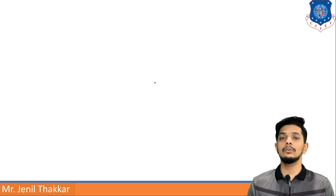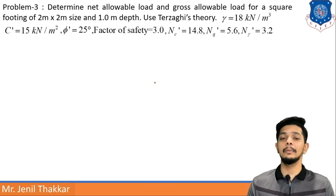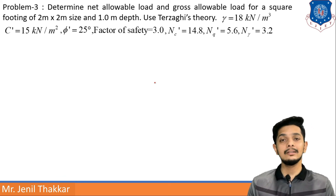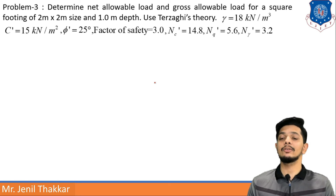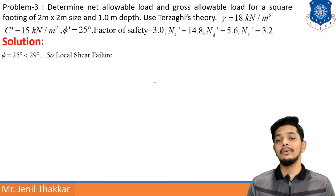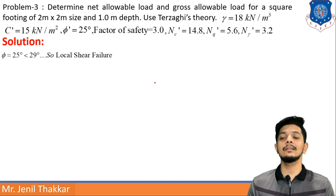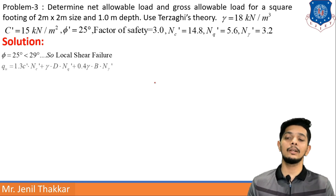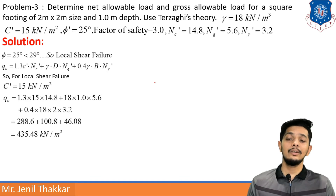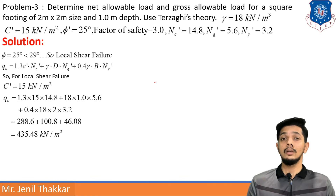Problem 3: Determine the net allowable load and gross allowable load for a square footing of size 2 m × 2 m at 1 m depth using Terzaghi's theory. Given: γ = 18 kN/m³, c' = 15 kN/m², φ' = 25°, factor of safety = 3. Since φ' = 25° < 29°, this is a local shear failure case. The formula used is: qu = 1.3·c'·N'c + γ·D·N'q + 0.4·γ·B·N'γ.